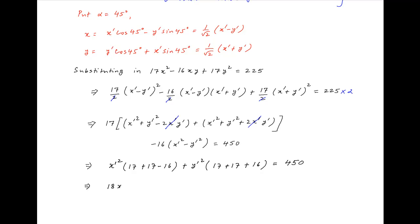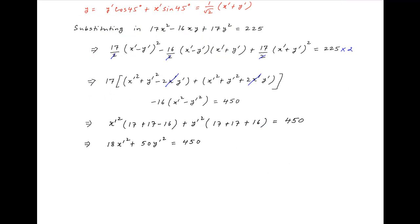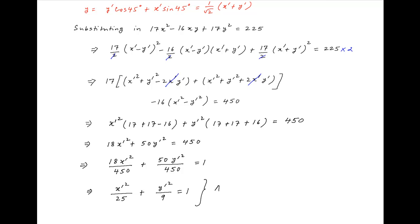This implies that 18 times X'² plus 50 times Y'² is equal to 450. Dividing both sides by 450, we get 18X'² upon 450 plus 50Y'² upon 450 equals 1, which simplifies to X'² upon 25 plus Y'² upon 9 equals 1, which is the required answer.